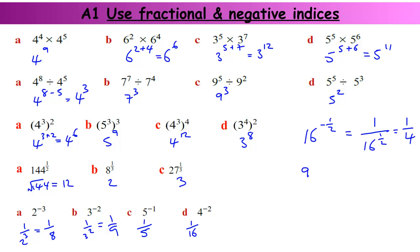Let's do another one: 9 to the power of 3 over 2. This is a fractional power, but it's also something times a fractional power. If I separate it out — because 3 over 2 is 3 lots of 1 half — I do 9 to the power of 1 half, and then cube that result. So that's the same as 9 to the power of 3 lots of 1 half, which is 3 over 2. 9 to the half is 3 (the square root of 9 is 3), and 3 cubed is 27.